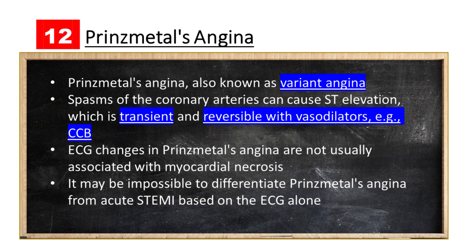Prinzmetal's Angina, also known as variant angina, is caused by transient spasms of the coronary arteries, which can lead to ischemia in the heart muscle. The spasm of the coronary arteries can also cause ST segment elevation, typically seen in the leads corresponding to the affected coronary artery, and is associated with multiple spasms involving different segments of the coronary arteries.